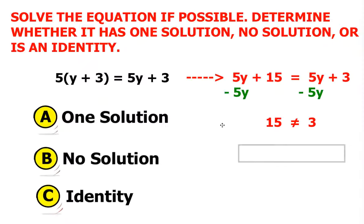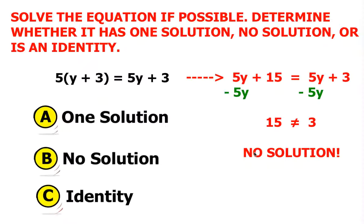So therefore we call this type of answer no solution. Let's see what happens when we click one solution — don't! Let's see what happens when we click identity — don't!